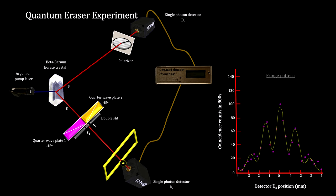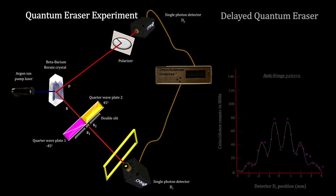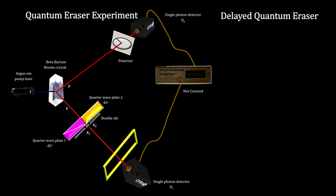Again, fringe and anti-fringe patterns are produced. This setup is made to look like interacting with the P photon changes what happens to the entangled S photon in the past. This has been given its own name, delayed quantum eraser, even though nothing has been erased.